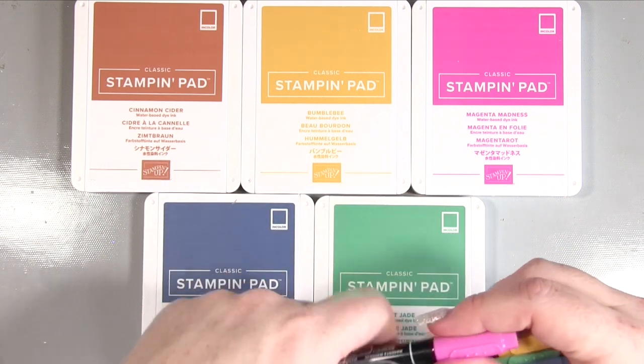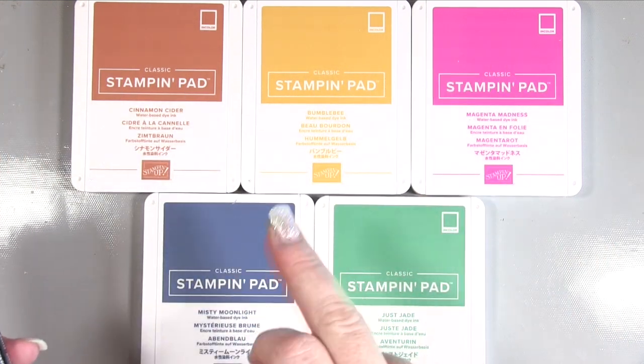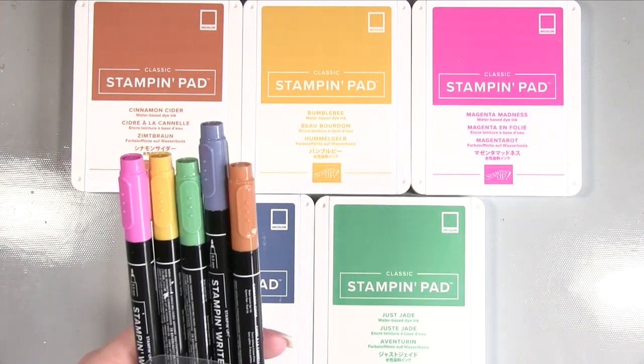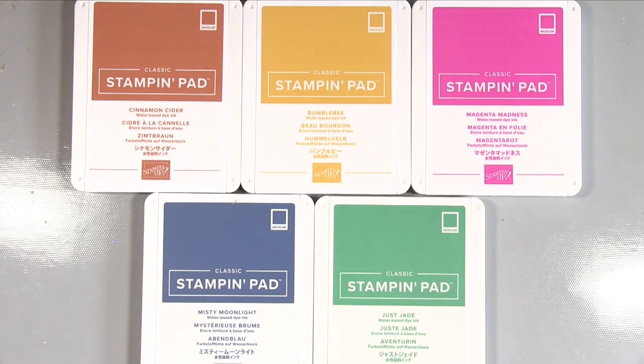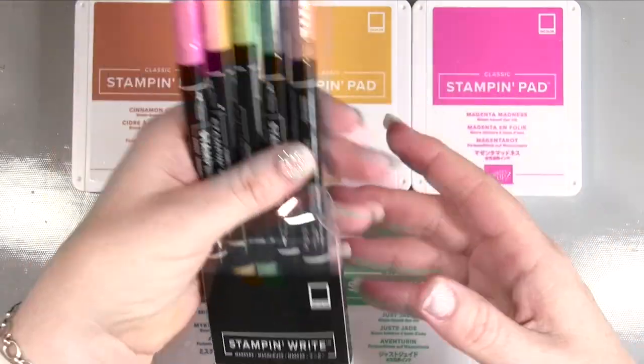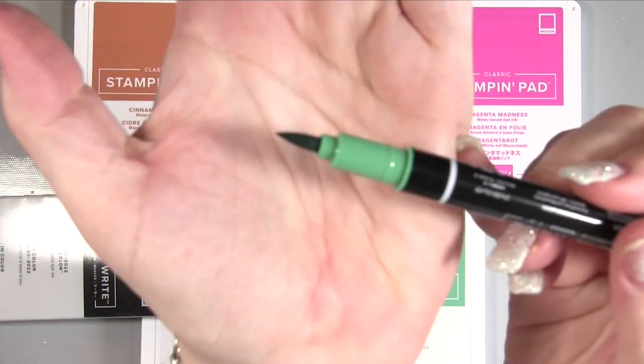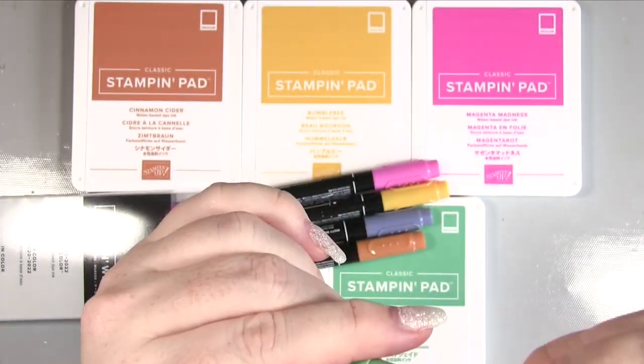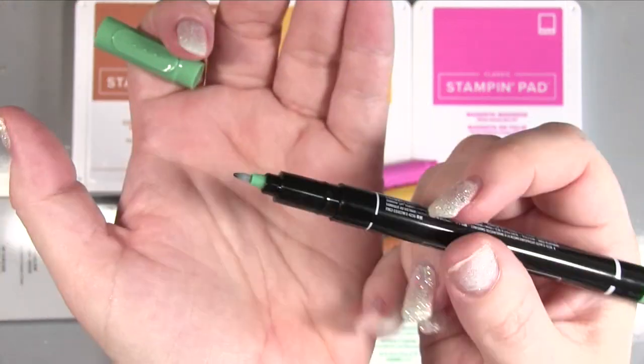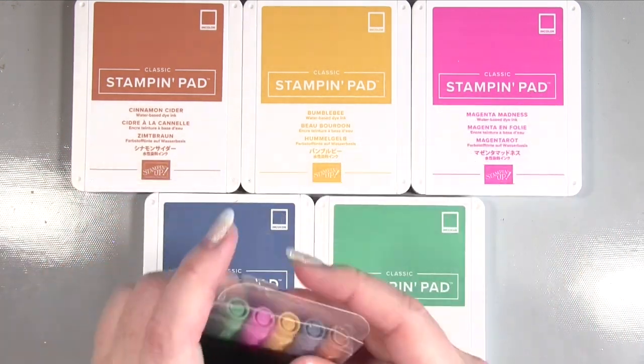In the other markers you basically get a dark and a light tone of each colour. So for example with this Misty Moonlight you'd have a light shade and a dark shade in the marker. So we've got here the same colours in the markers and you've just got two different ends. So you've got your brush marker and then on the other end you've got your fibre tip end. So great for journaling on that end and great for colouring on the other and that's the same across all five colours.